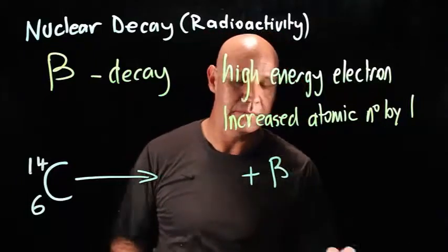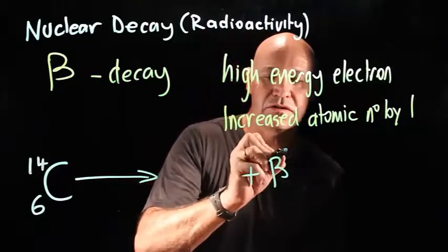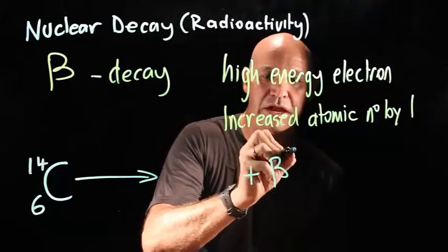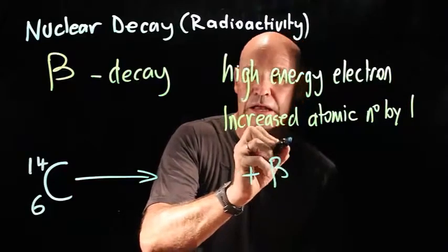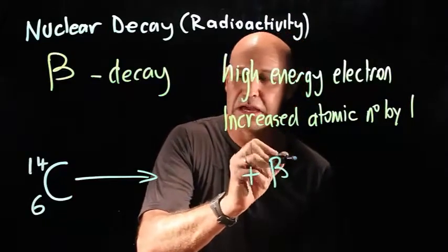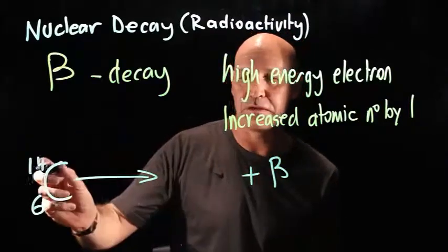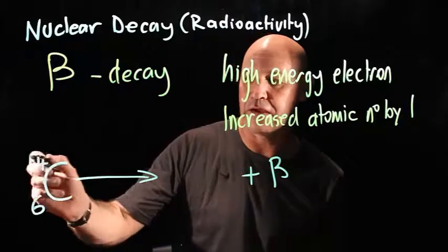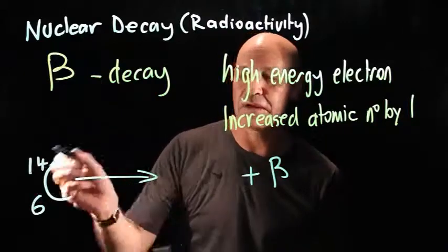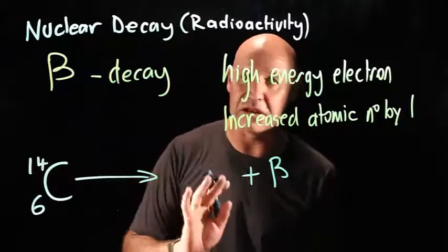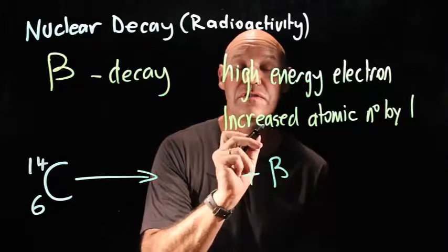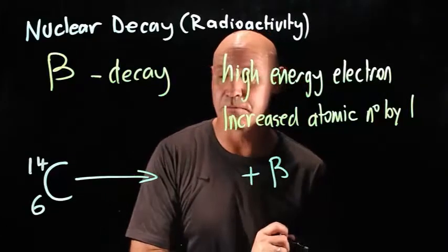Sometimes you see it written with a charge of negative 1. I think that's misleading because you might think you have to subtract that from something, but you don't have to. So just draw it as the beta particle.